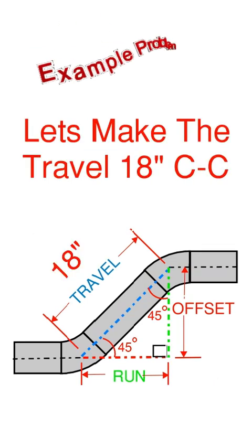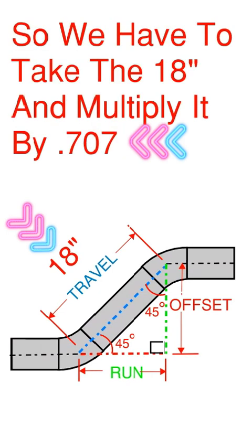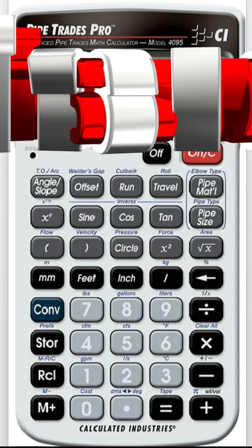So for our example problem, we're going to make the travel 18 inches center to center. So we have to take the 18 inches and multiply it by 0.707.